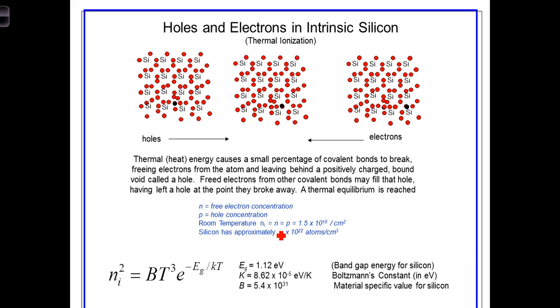At room temperature, the number of electrons will equal the number of holes, which we're calling N sub I, and it'll be on the order of 1.5 times 10 to the 10th electrons or holes per cubic centimeter. Compare this to silicon that has approximately 5 times 10 to the 22nd atoms per cubic centimeter. So clearly, the number of covalent bonds that are broken is a very, very small percentage